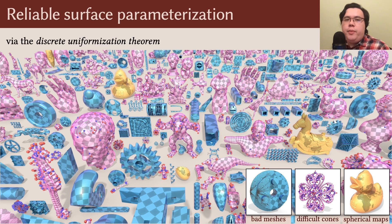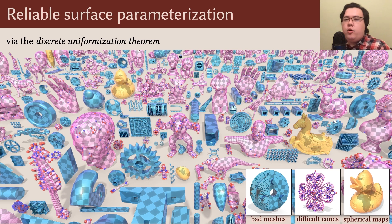All three are enabled by a recent discrete uniformization theorem, which essentially states that any triangle mesh with any choice of cones can be parameterized by a discrete conformal map. But even with this theorem in hand, there's still quite a lot of work required to apply it to meshes in practice.